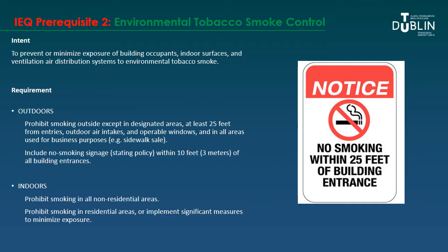The second prerequisite is about avoiding tobacco smoke in buildings. This is a departure from LEED 2009, which allowed smoking in commercial buildings if the room was separately ventilated. LEED version 4 is the first version that actually prohibits smoking inside non-residential buildings. Outdoors, smoking must be prohibited except in a designated area at least 25 feet from entries, air intakes, or operable windows, and no-smoking signage is required within 10 feet of all entrances.